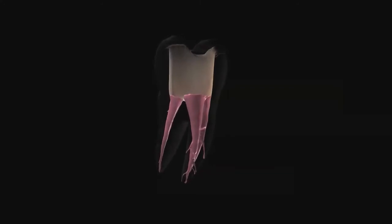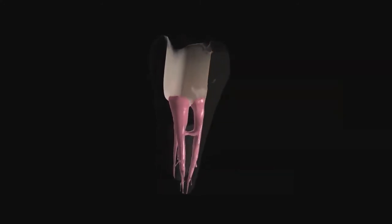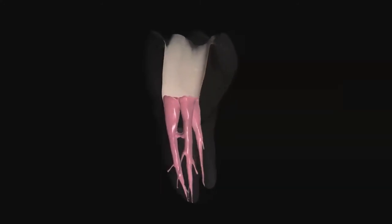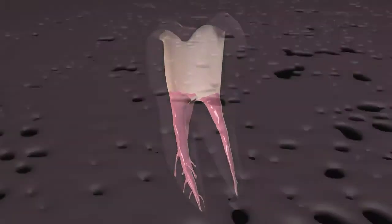Gutta-core. Cross-linked gutta-percha core obturators. Everything you know and trust about gutta-percha with the convenience and performance of a dense-fill Tulsa dental specialties obturator.